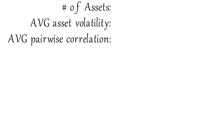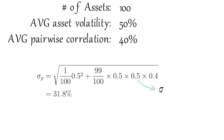Now for a 100 asset equal weight portfolio with an average asset volatility of 50% and an average pairwise correlation of 40%, the amount of systematic risk equals 31.8%.